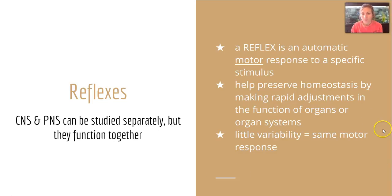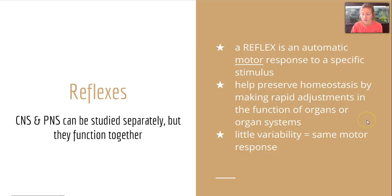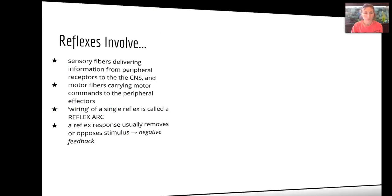That automatic response is a motor or output response to a specific stimulus. Reflexes help us preserve homeostasis by making rapid adjustments, whether in the function of an organ itself or a whole organ system. There's little variability — usually whatever stimulus you have, it's going to give you the same motor response the majority of the time.